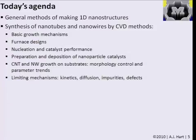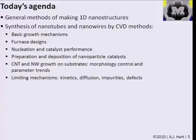We're going to go through a bunch of topics, starting with the basic growth mechanisms from the catalyst particles. We'll talk about different designs for furnaces or growth systems, how the catalyst behaves, how structures nucleate, how catalysts are typically prepared, and aspects of growth on substrates — controlling morphology, whether growing just one at a time, a tangled film, or a lined forest. At the end we'll get into limiting mechanisms, growth kinetics, and draw parallels to nanoparticle growth, including diffusion versus reaction limitation, impurities, and defects.